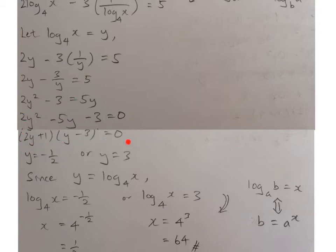Next step, I factorize my equation. I will have y equals to negative half or y equals to 3. Since we introduced this y, I have to change it back to x. So y equals to log₄(x). I change my y back to log₄(x) equals to negative half.